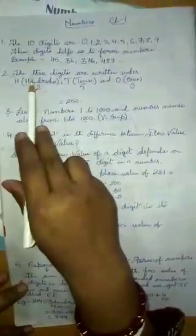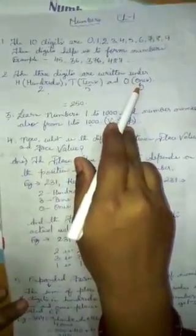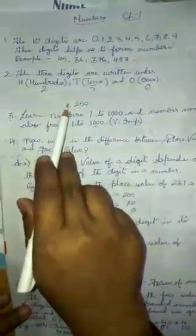Now, these 3-digit numbers are written under hundreds where H stands for hundreds, T stands for tens and O stands for ones. Here we take a number 250 where 2 will come under hundreds place, 5 will come in tens place and 0 will come in ones place.